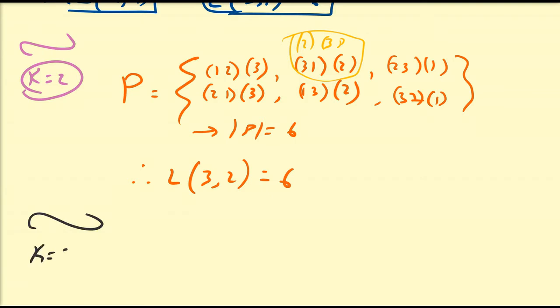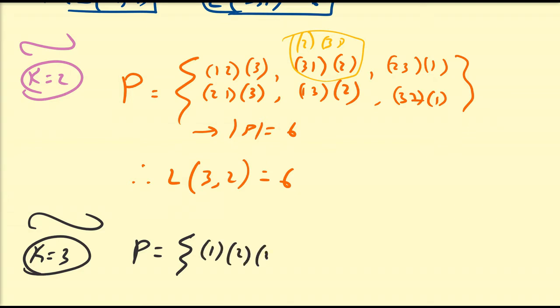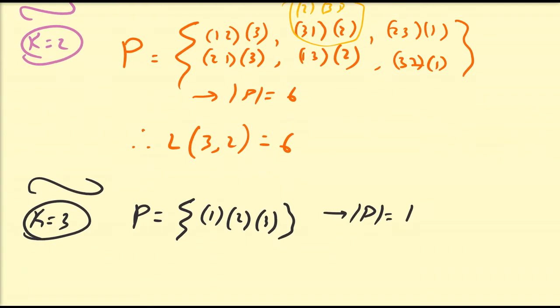Let's look at k equals 3. We have three elements and we want to break them into three non-empty subsets. That's going to be {1}, {2}, {3}, and I invite you to prove why that is the only one. The number of partitions possible is 1, therefore L(3, 3) = 1.